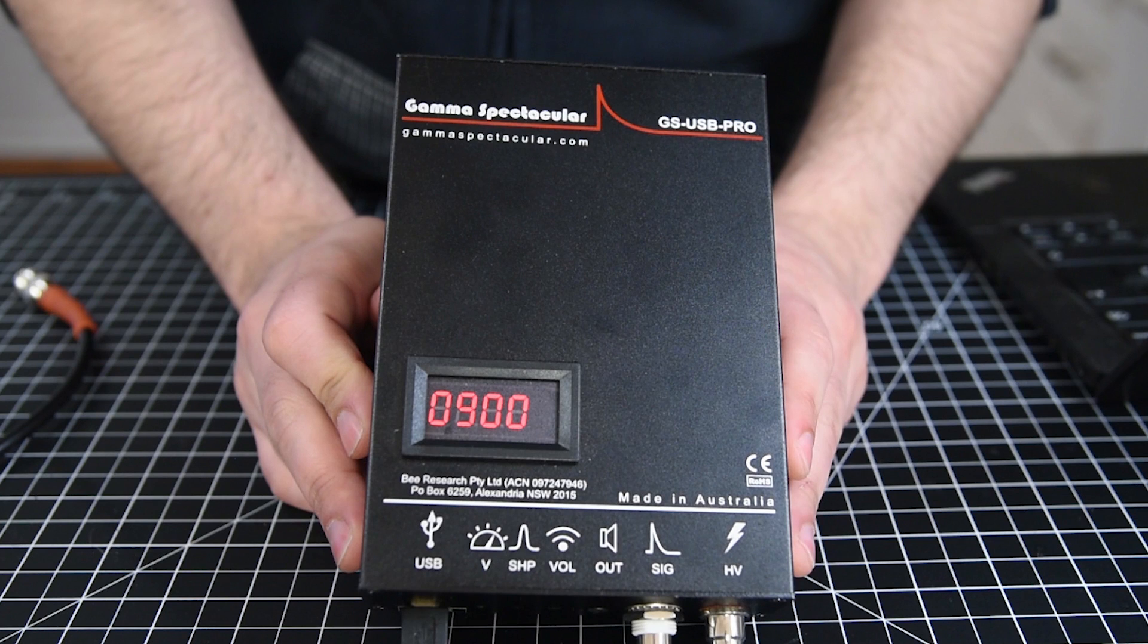Finally, this box is where all the magic happens. It's the GSUSB Pro from a company called Gamma Spectacular. My friend Steven Sesselman runs the company, and was kind enough to send me this one. Honestly, I love this thing. It's really easy to use, and it's packed full of features. And compared to the price of a gamma spectrometer normally, it's really quite affordable. So if you're interested, I've put some links in the description.